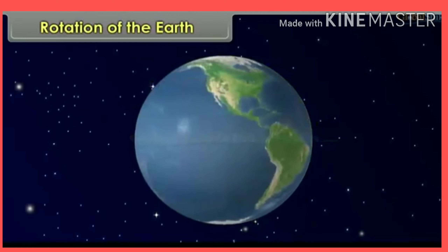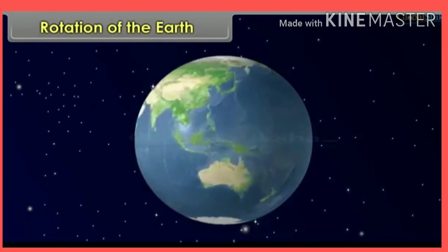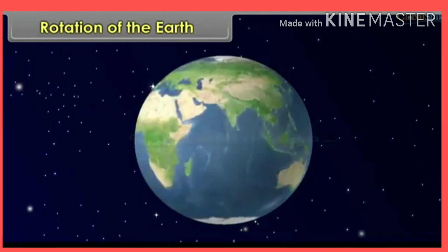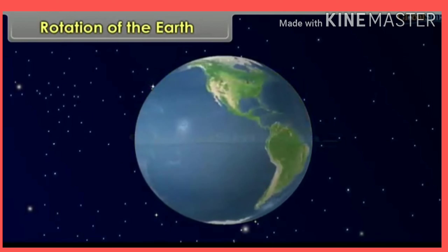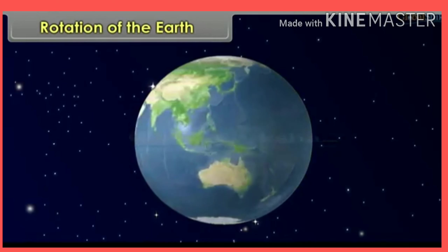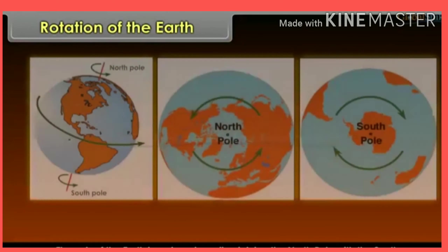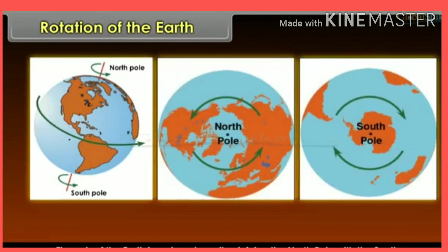Rotation of the Earth: The movement or motion of the earth on its axis in 24 hours is defined as rotation. The axis of the earth is an imaginary line joining the north pole with the south pole. It makes an angle of 66 and a half degrees with its orbital plane.